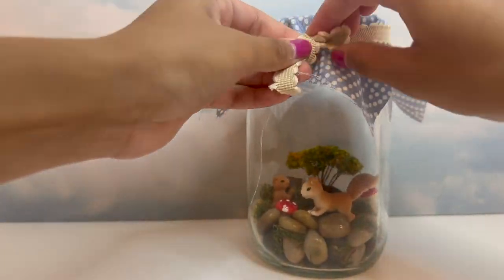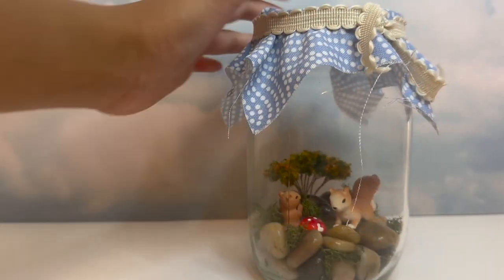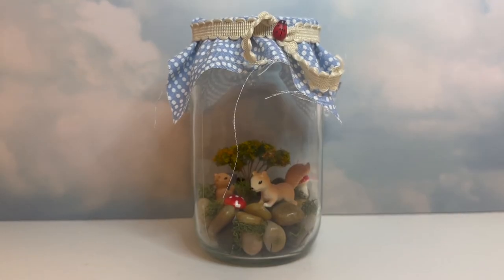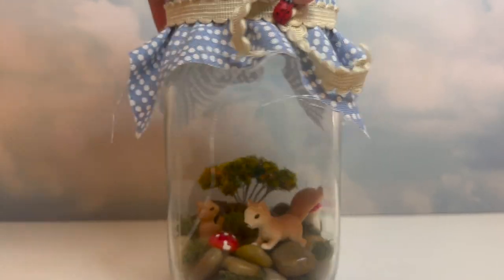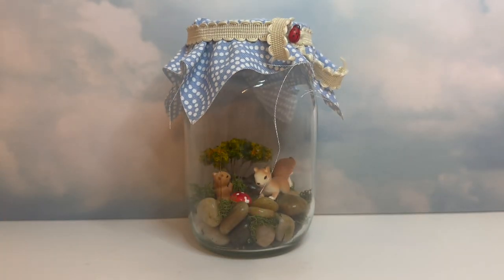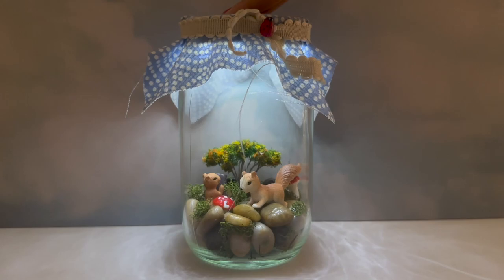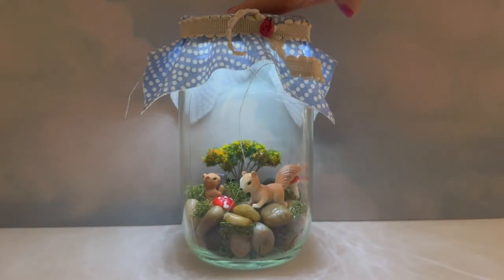For a final optional step, you can use a piece of fabric and ribbon to cover up the circuitry on the top of the cap. I like doing this because it gives it a cleaner finish, but it's totally up to you. After doing this, you're done! I hope you enjoyed learning how to make these light-up mason jar crafts with me.